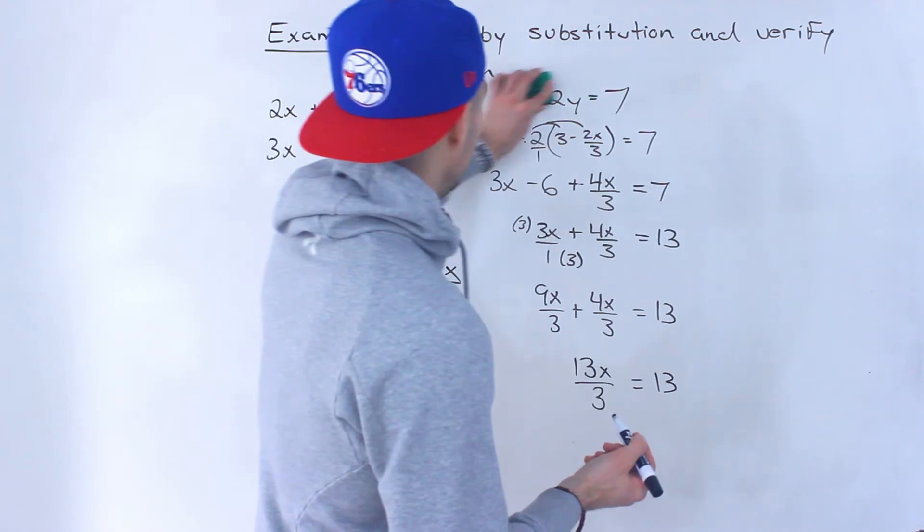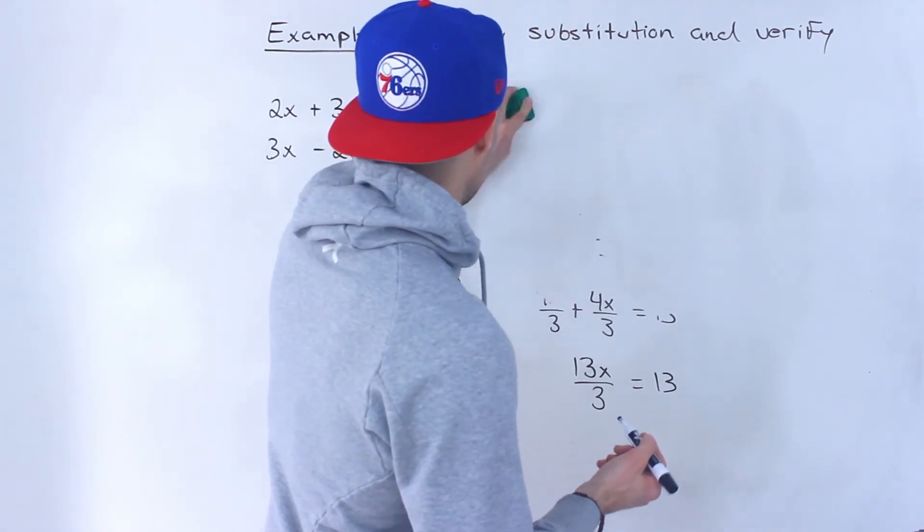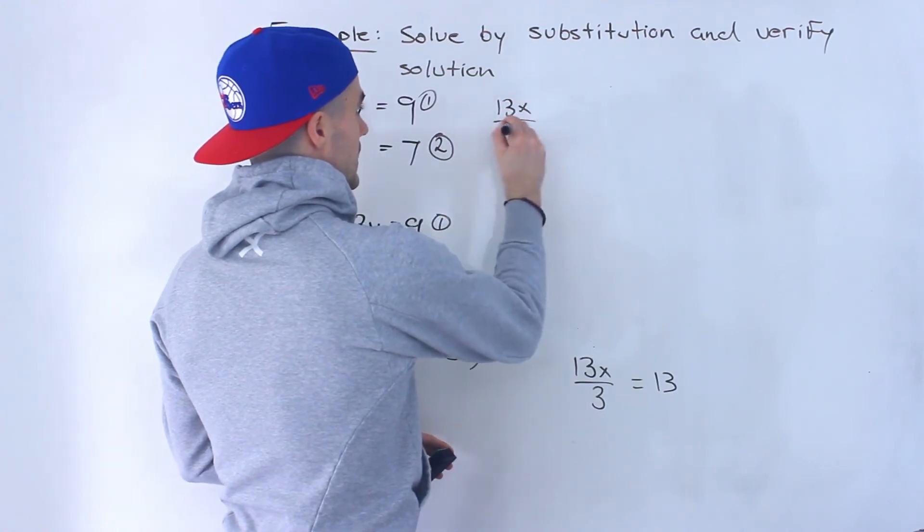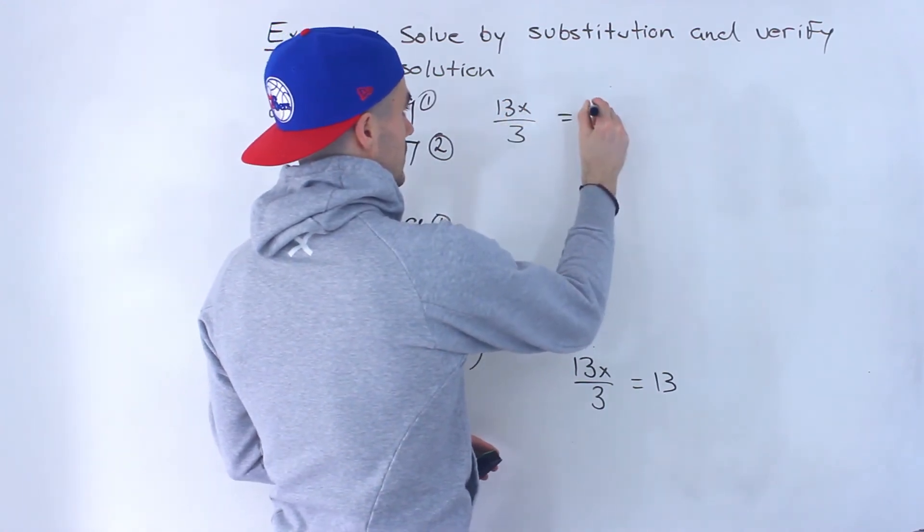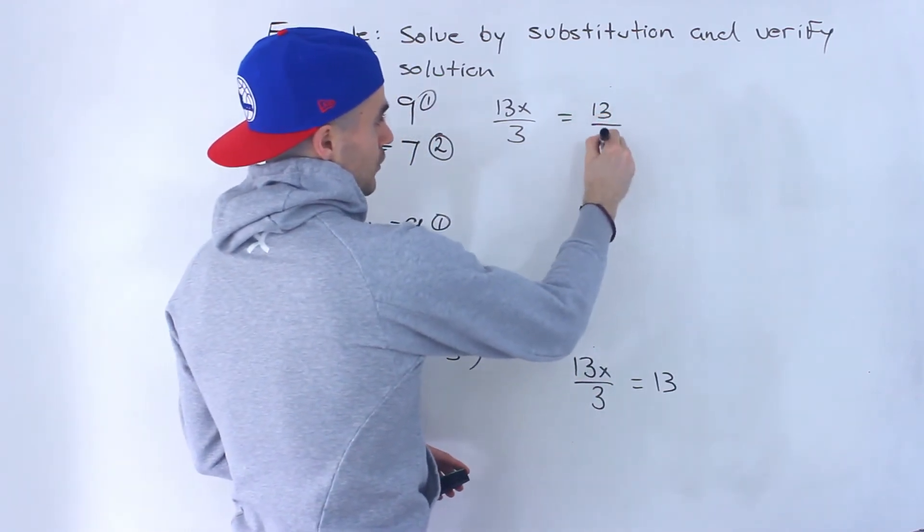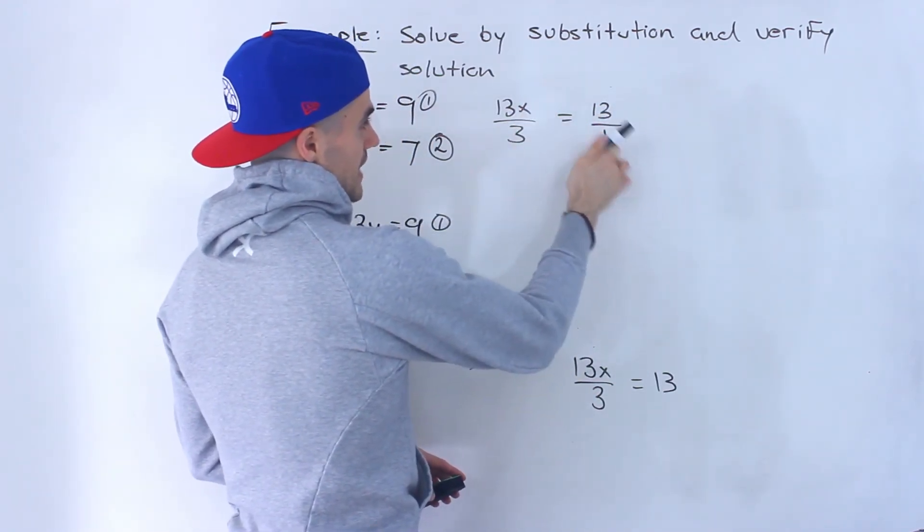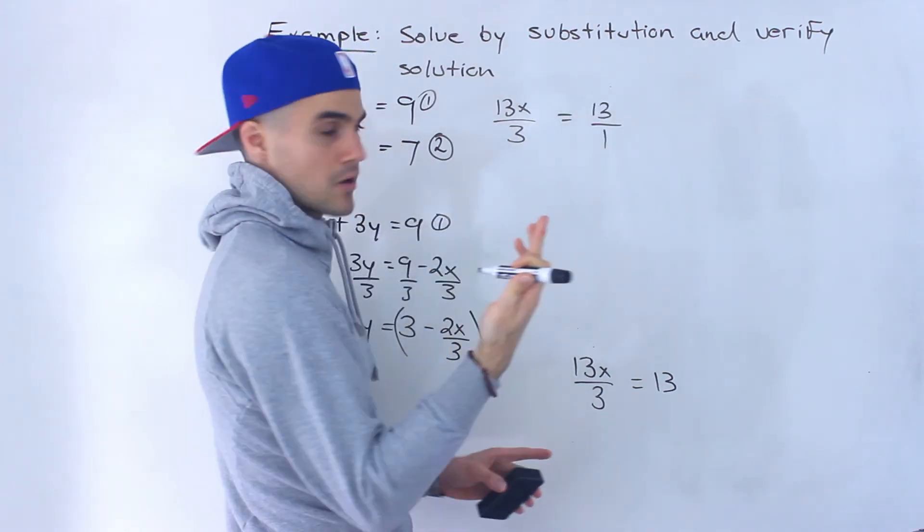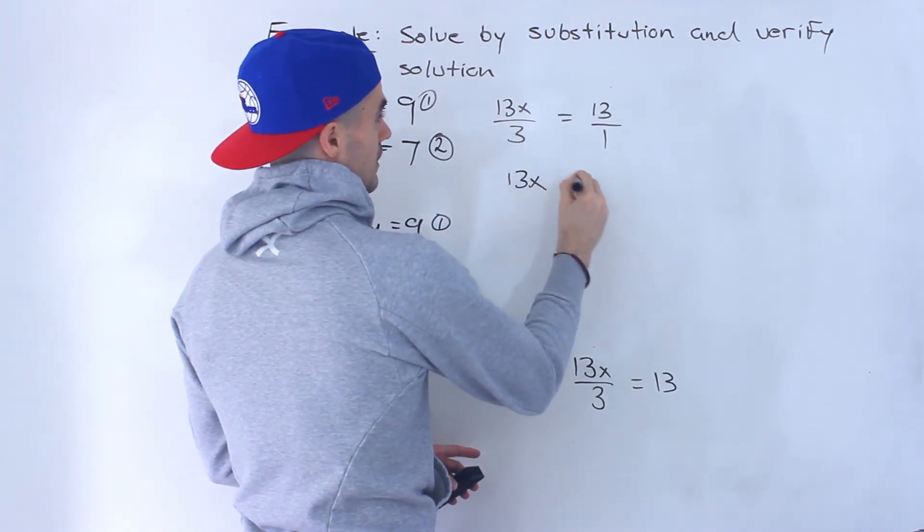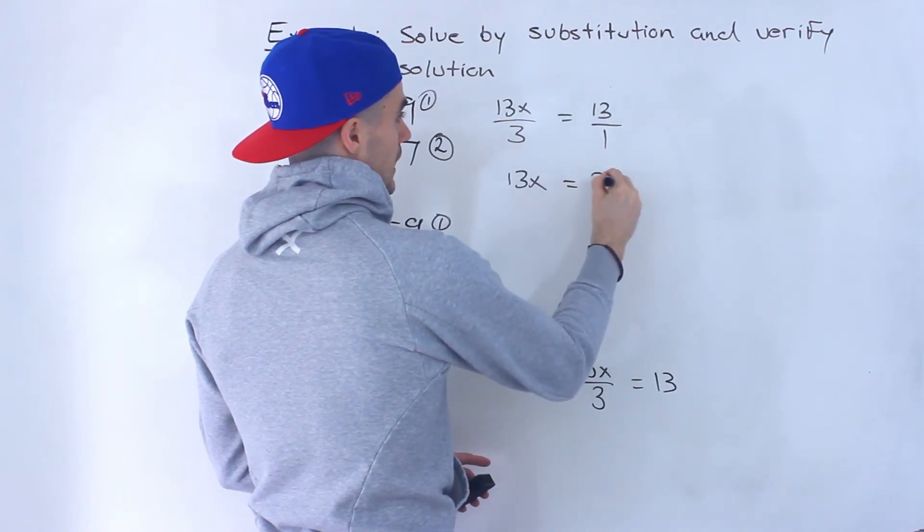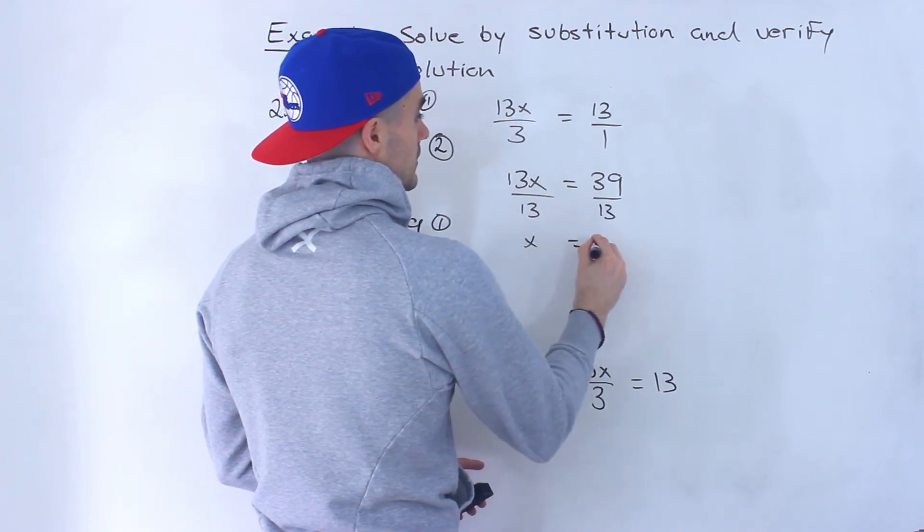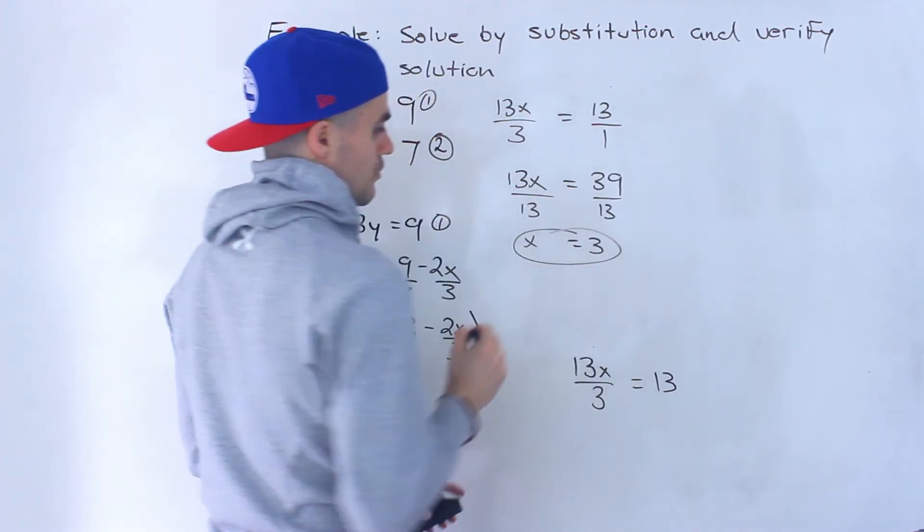So now what I'm going to do, I'm going to erase all this, give myself some room. So if I rewrite this over here, 13x over 3 equals 13. This 13 I could put over 1. And then to solve for this x, notice we can cross multiply here. So 1 times 13x gives us 13x. 3 times 13 gives us 39. And then notice we could divide both sides by 13. So x would end up equaling 3.